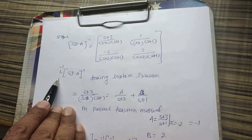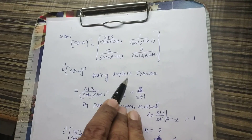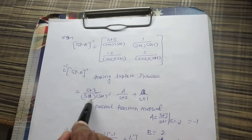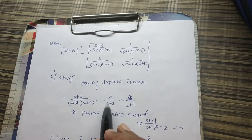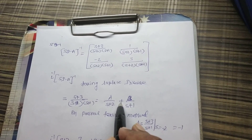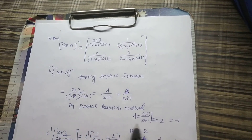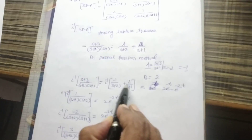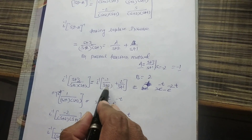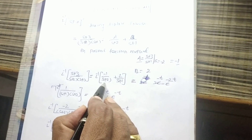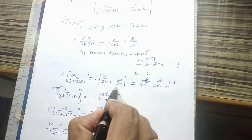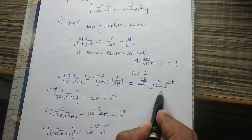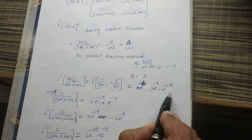We take the Laplace inverse of every element of this matrix. For the first element, (s+3)/[(s+2)(s+1)], using partial fractions we write A/(s+2) plus B/(s+1), giving A equals -1 and B equals 2. So the Laplace inverse is 2e^(-t) minus e^(-2t).